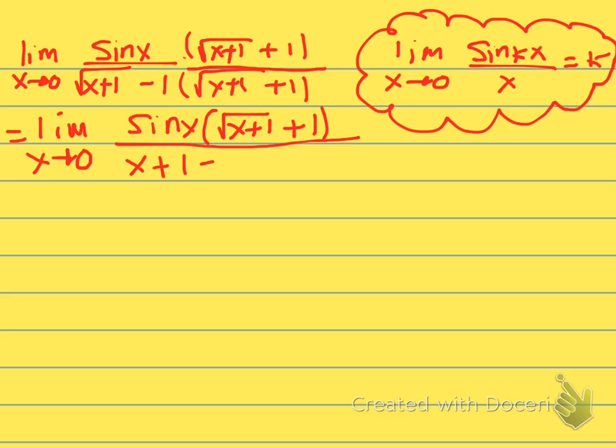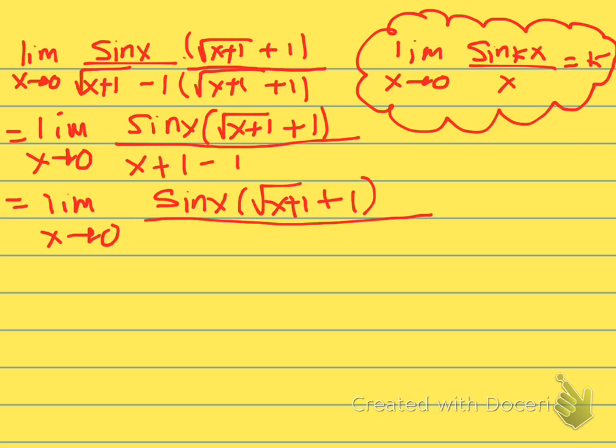So we end up with limit as X approaches 0 of sine X over X times square root of X plus 1 plus 1 all over X. If you look here closely, I actually have this guy right here.